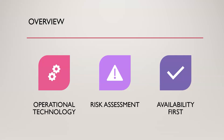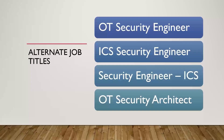Availability means the right people, systems, or applications can access information when they need it. When we talk about critical infrastructure, we focus on availability first because some of these systems are critical to actual human life — if something goes down, it could kill somebody. This is why it differs so much from traditional IT, and why penetration testing in this space requires real experience. You could literally harm or kill people if you make serious mistakes, so the responsibility is immense.